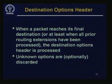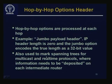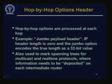The destination options header is processed when a packet reaches its final destination, after all prior routing extensions have been processed. Unknown options are optionally discarded. The hop-by-hop options header is looked at at the destination but must also be processed at each intermediate hop — for example, the jumbo payload option, where the IP header length field is 0 and the jumbo option encodes the true length as a 32-bit value, allowing very large packets. It is also used to mark spanning trees for multicast and real-time protocols.